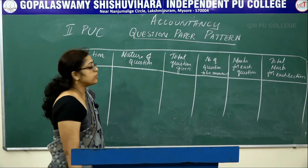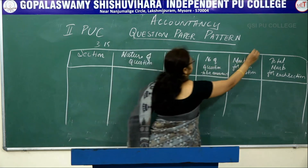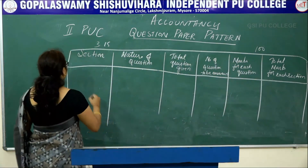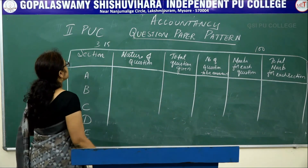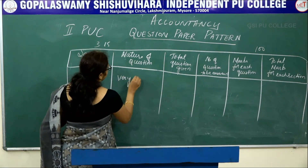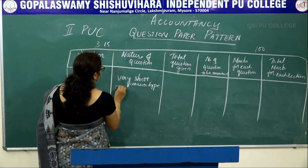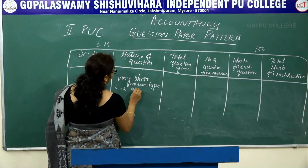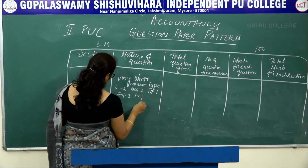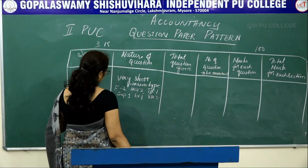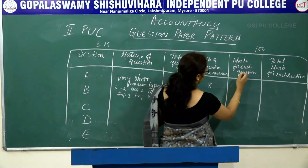Let us see the question paper pattern of Accountancy. Three hours and 15 minutes is allotted for the paper. The total maximum marks is 100. There are 5 sections: Part A, B, C, D, and E. Section A consists of very short answer type questions — 3 questions, MCQ 2 questions, true or false 1 question, expansion 1, example 1, and very short answer type 3 questions. Total number of questions given in this section is 10.